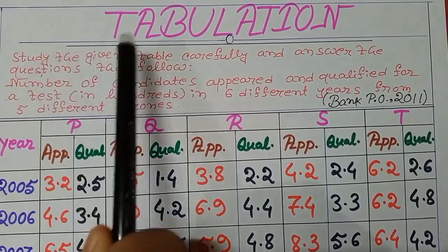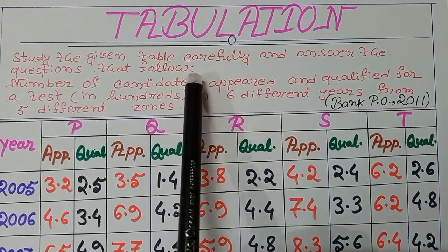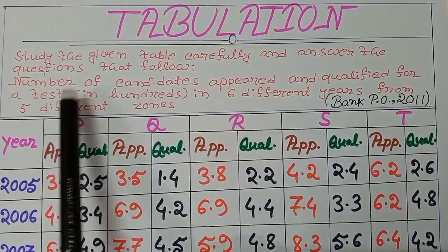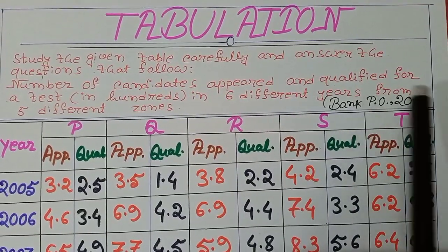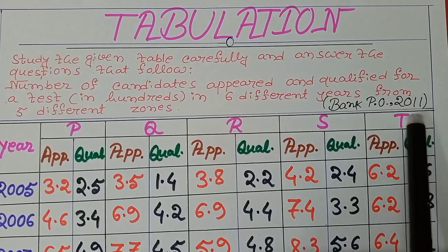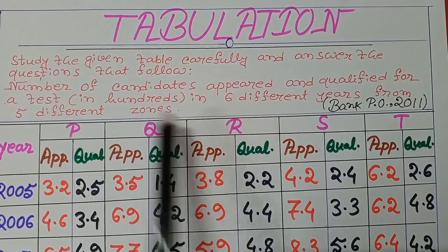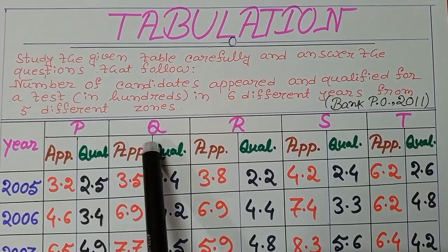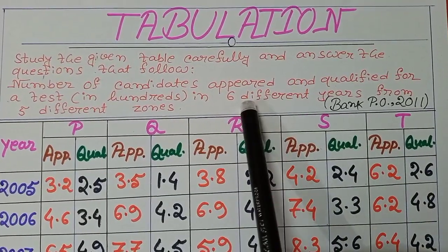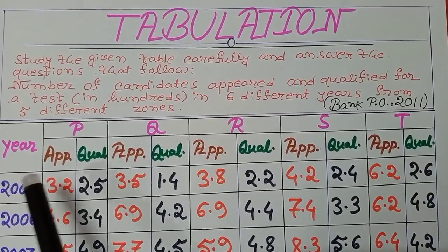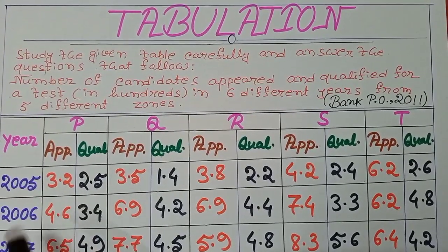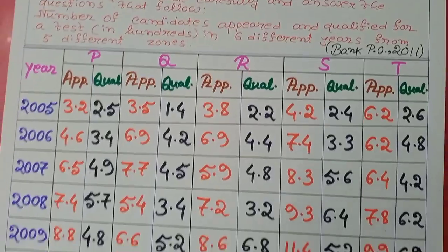Hello friends, today we learn tabulation. Study the given table carefully and answer the questions that follow. The table shows the number of candidates appeared and qualified for a test, in hundreds, in six different years from five different zones: P, Q, R, S, T. The six different years are 2005 to 2010.